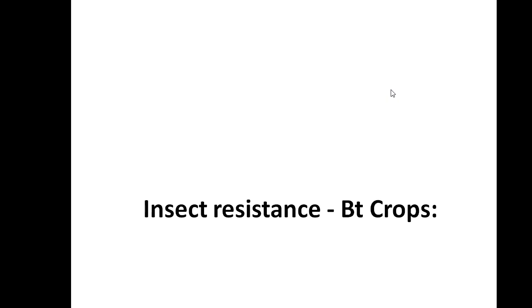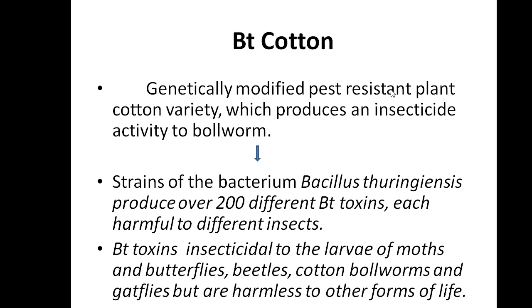Next, coming to insect resistance — BT crops. BT crops means the plant is made resistant to insects. Some plants like potato, tomato, brinjal, or cotton are attacked by insects that eat the plant stem, causing bores and holes, and different kinds of damage. The plant should resist insects to stop this damage. So we use BT cotton — a genetically modified, pest-resistant variety.